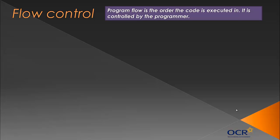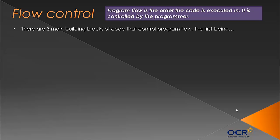It is literally flow. It's easy to visualise it as water flowing in a stream — it's the execution path going through the program. I had to think of it as there being three main building blocks of code that control how the program flows. The first, and the simplest, is sequence.